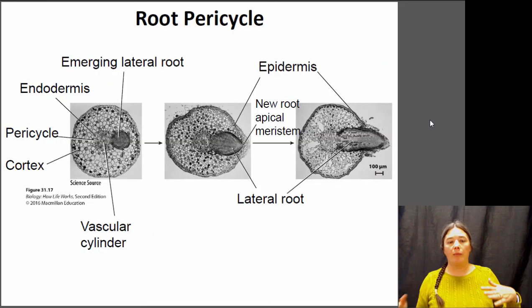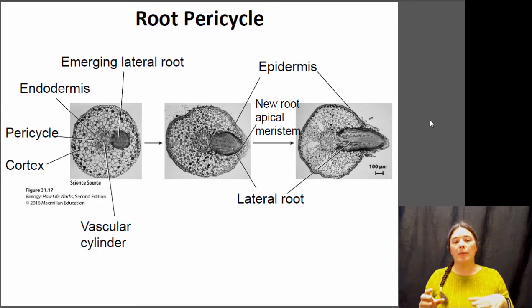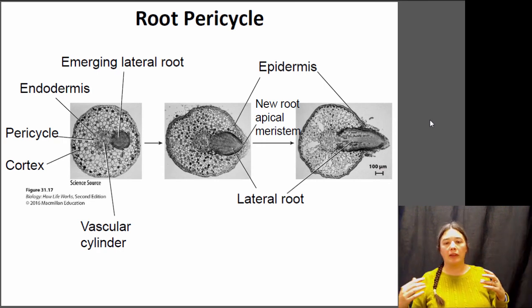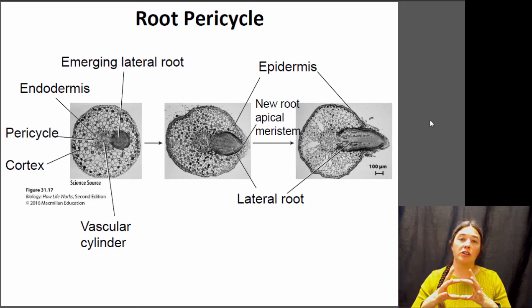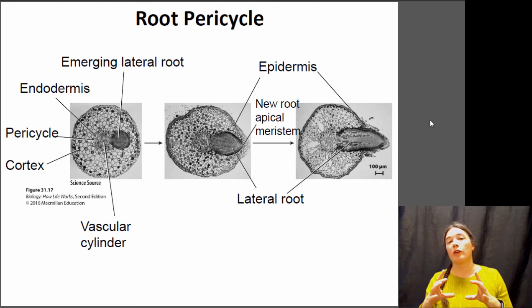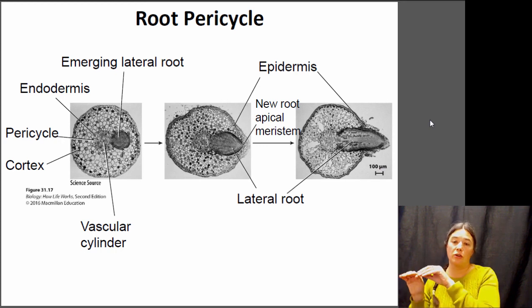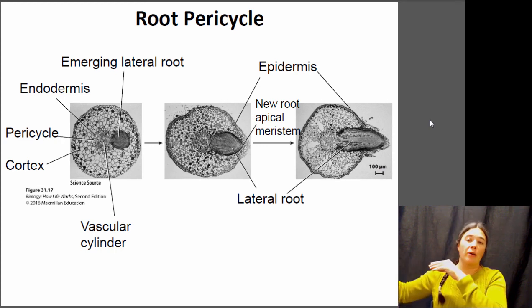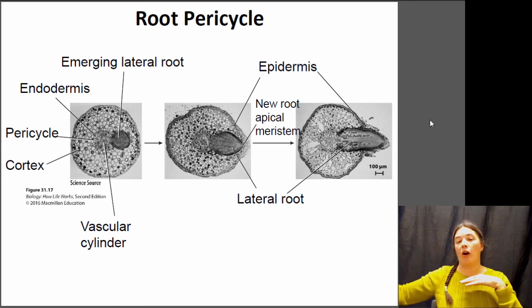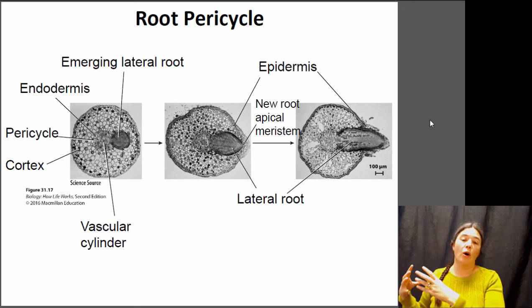Roots sometimes need to form branches as well, but it doesn't happen the same way as in shoots because roots don't have axillary buds. The branching of roots actually comes from the endodermis — that layer of tissue around the central vascular tissue in the middle of the root. The endodermis can have new apical meristems start to form from its edge; they erupt out the side of the root and cause a new root to grow with its own apical meristem.